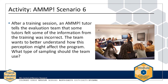After a training session, an AMP tutor tells the evaluation team that some tutors felt some of the information from the training was incorrect. The team wants to better understand how this perception might impact the program. The team wants to understand why some tutors felt the training information was incorrect and how their perception might affect the program. Since only some tutors have knowledge of this issue, the most applicable sampling type is snowball sampling. The team should first interview the tutor who approached them and ask for referrals to other tutors who know about the issue.